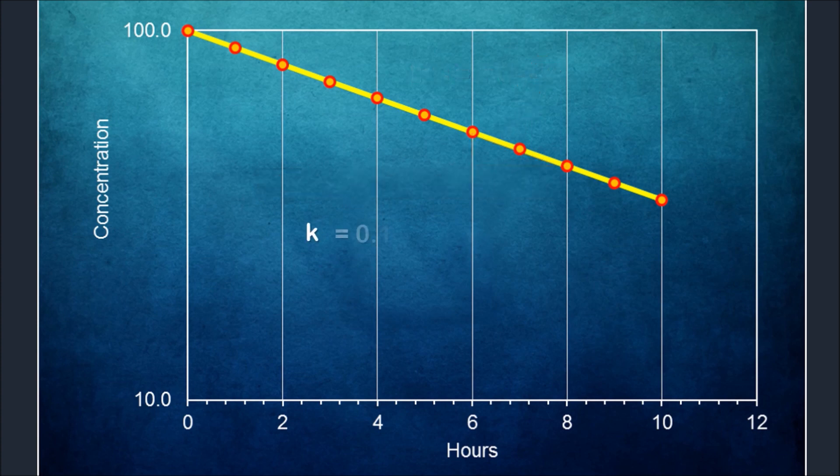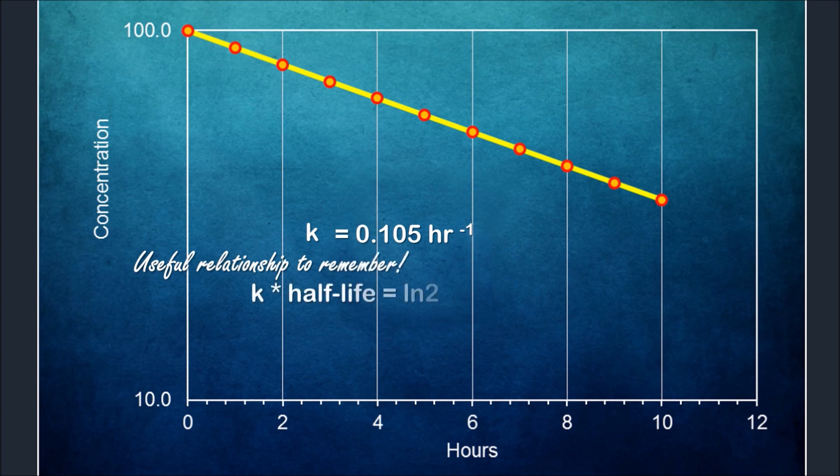Here, we can calculate the k for this drug to be 0.105 per hour. But we don't have to stop here. The elimination rate constant k has an inverse relationship with the half-life through the natural log of 2. Now this is a very useful pharmacokinetic relationship to remember because we can use this to understand a lot of pharmacokinetics.